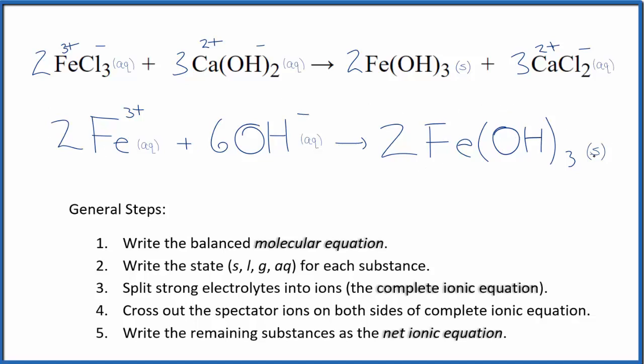We probably should reduce the coefficients. We can divide everything by two. That would give us one, three, one. And we don't write the one by convention. So this is the balanced net ionic equation for FeCl3 plus Ca(OH)2.